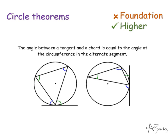This is the last and most complicated circle theorem — the one students very often forget — and that's the alternate segment theorem: the angle between a tangent and a chord is equal to the angle at the circumference in the alternate segment. So this angle here is equal to this one, and this angle here is equal to this one. Look out for any triangle drawn inside the circle where the vertices touch the circumference and a tangent at one of the vertices — these alternate angles are equal.